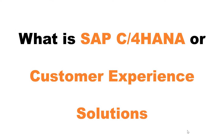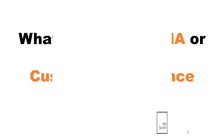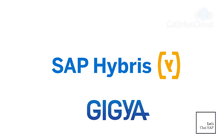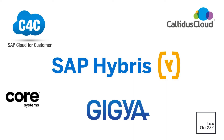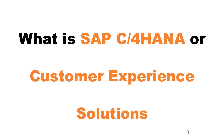Now let's look at what is C4HANA or SAP Customer Experience Solutions. SAP C4HANA consists of various marketing, sales, and customer relationship management products. SAP acquired different companies offering CRM products like Hybris, Gigia, Caledas Cloud, and Core Systems. It also has its own products like C4C (Cloud for Customer) and S4HANA Public Marketing Cloud. SAP believed it was time to form one integrated solution under one new name — and that's how C4HANA was formed.